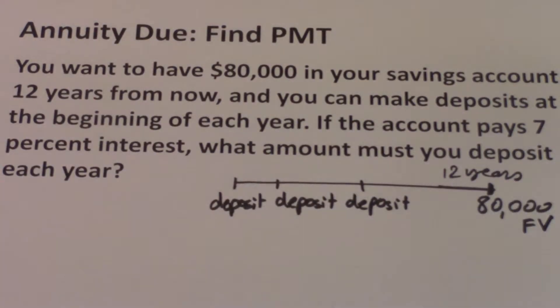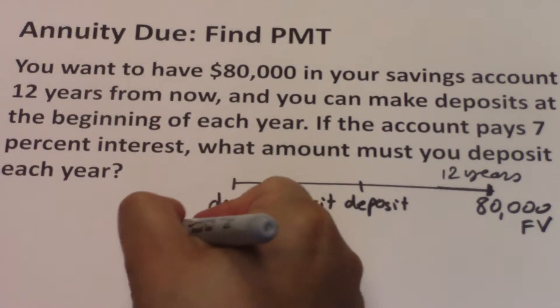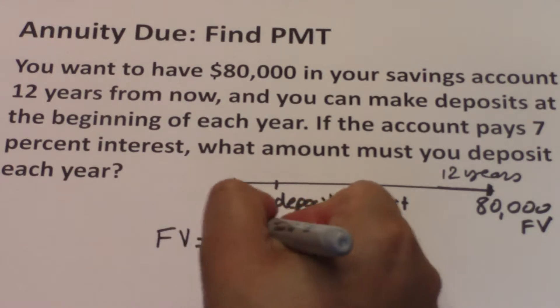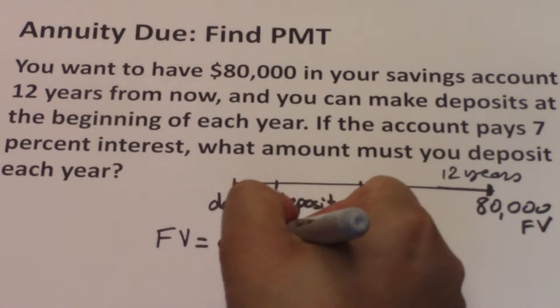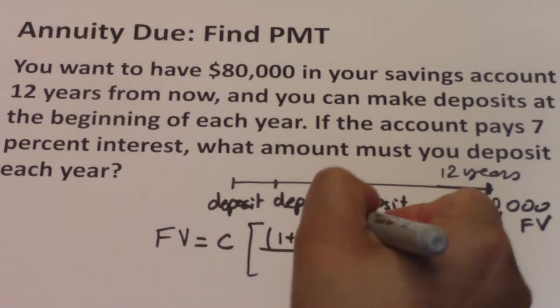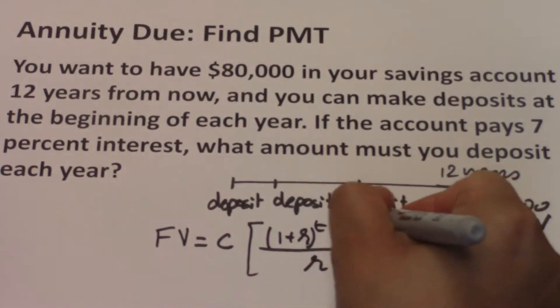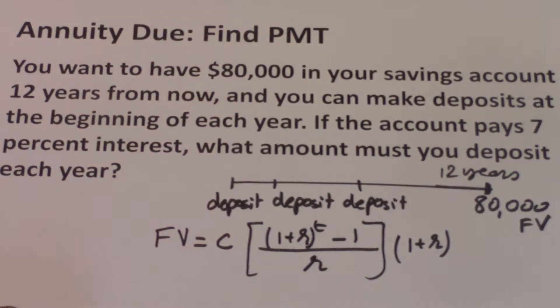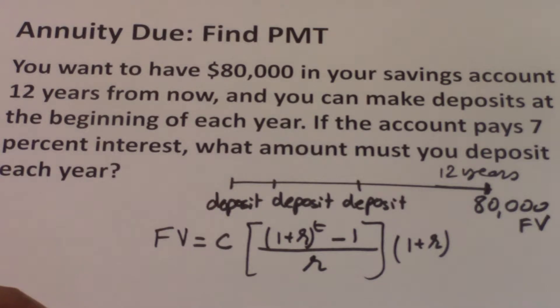So here we need to use the future value annuity due formula to determine the amount of the deposit. The future value formula says that FV equals C times (1 plus R) to the power T minus 1 over R times (1 plus R). So this is the formula that we have.